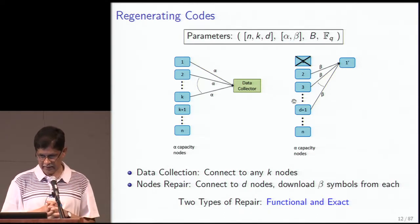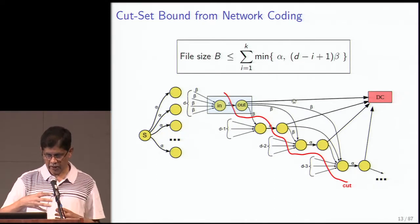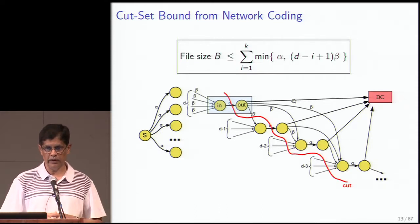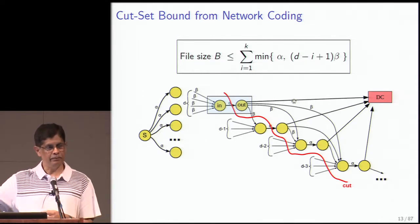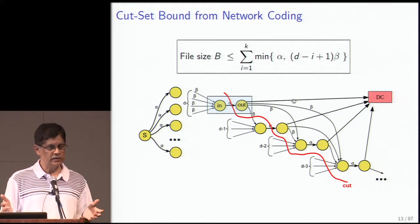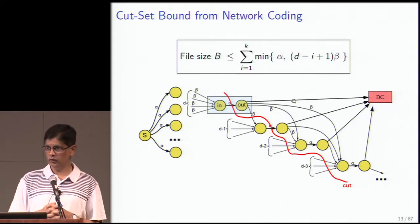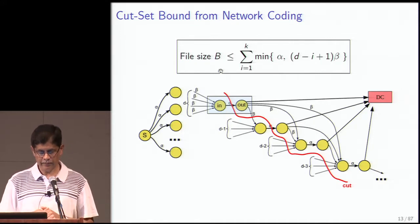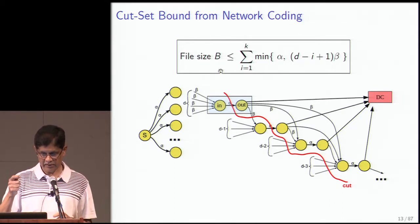If you take this network and look at how it evolves over time — a node fails, it's replaced, another node fails, it's replaced — a data collector should be able to recover data by connecting to any k nodes regardless of which stage in time or how many repairs a node has undergone. This makes it a multicast network, and you can use the cut-set bound of network coding to find the min-cut, giving a bound on the file size. A code is optimal if the file size equals the right-hand side, determined by parameters k, d, α, and β.